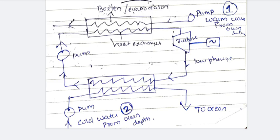Cold water from ocean depth is used to cool the system. The process is then repeated — it is a cyclic process.